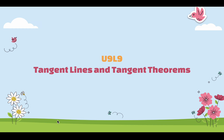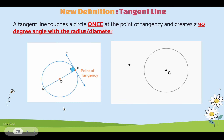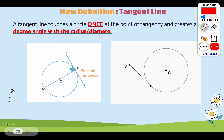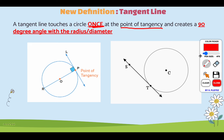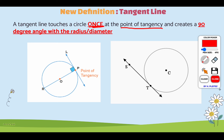What's up everyone? In this video we're going to be talking about tangent lines and we're going to learn about a few different tangent theorems. A tangent line touches a circle once at the point of tangency and creates a 90-degree angle with the radius or the diameter. Here in this example on the left we have line L, which is a tangent line to our circle. The point of tangency is wherever that line intersects with our circle.